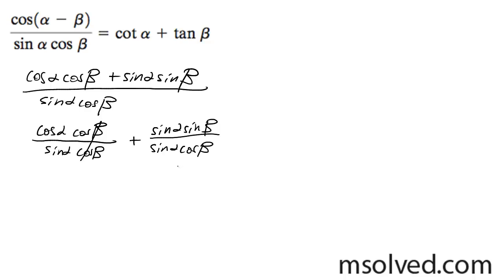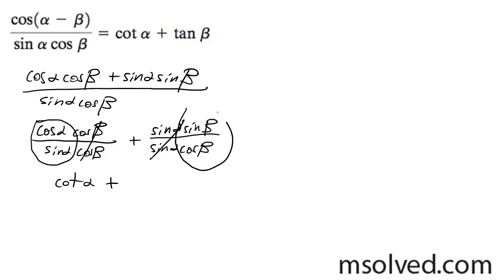These cosines cancel out. These sines cancel out over here, so over here I'm left with cotangent alpha, plus over here I get sine over cosine, so this is tangent beta. That's it — I just proved it.